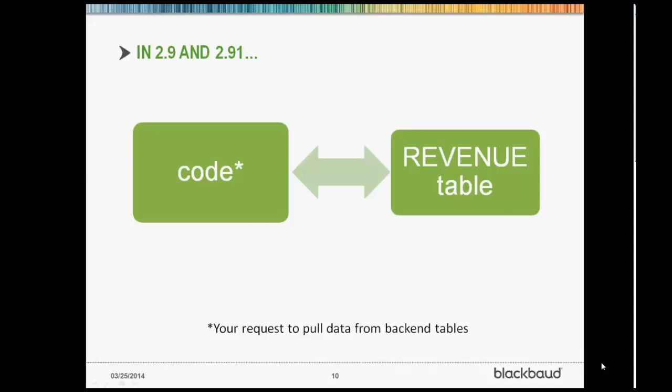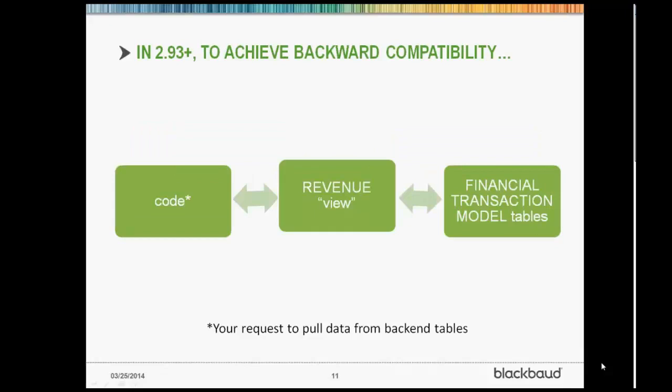One of the ways we did that was with views within the software. We've taken a lot of these tables that no longer exist and turned those into views. What that means is you can still use the exact same code that references those older tables to pull the information now from the new tables. So in 2.9 and 2.9.1, the code is written to directly reference the revenue table, for instance. When you go to 2.93 or higher, our code still references the revenue table, but since that table no longer exists and it's a view, we look through the view to pull that information from the tables where the data now resides.